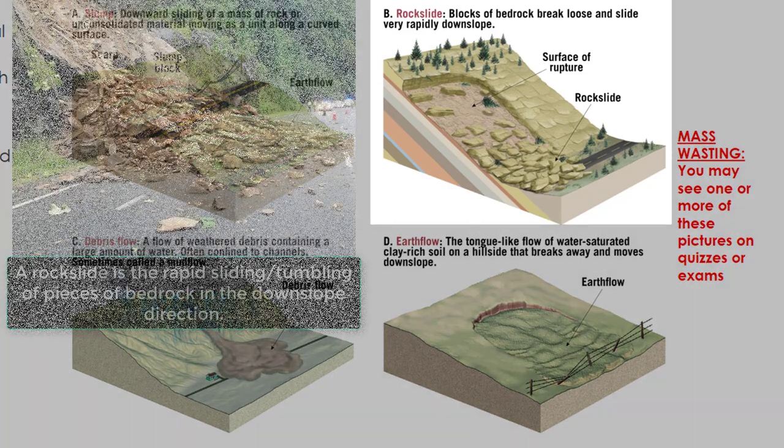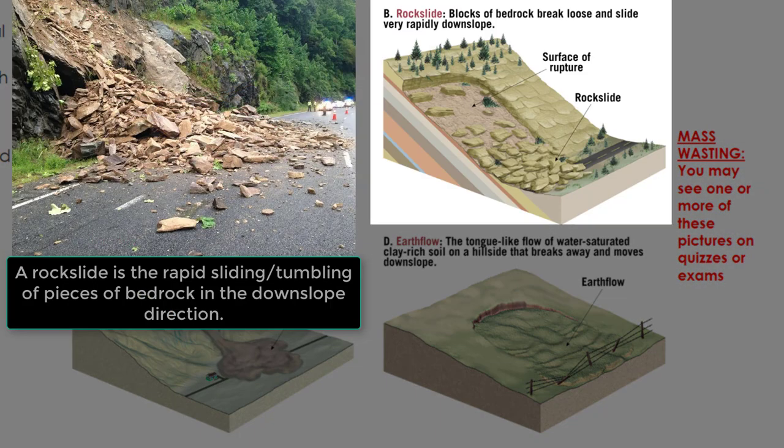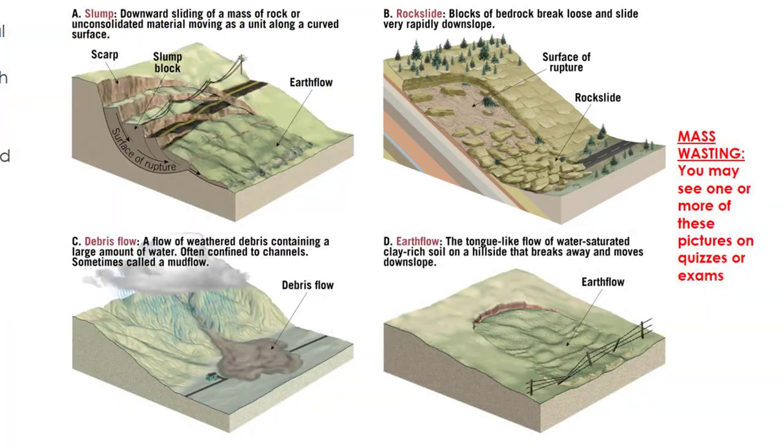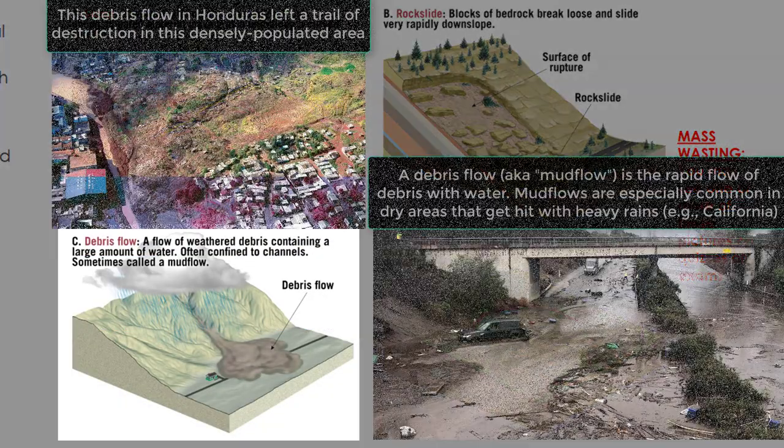Another example of mass wasting is rock slides. A rock slide occurs when blocks of bedrock break loose and slide very rapidly in the downhill direction. These rocks can vary in size, but they can be very large. Gravity pulls the rocks downhill and they typically pile up and accumulate at the lowest point under the hill or cliff where they were originally located.